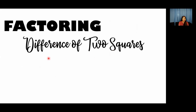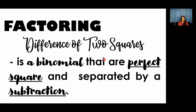But before that, what is factoring? Factoring is the inverse process of multiplication. Now, for factoring difference of two squares — what is difference of two squares? This is a binomial where both terms are perfect squares and they are separated by a subtraction or minus symbol. So we can say that a binomial is a difference of two squares if both of its terms are perfect squares and it is separated by a subtraction.